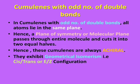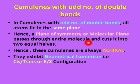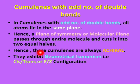Cumulenes with odd number of double bonds — we had already seen that in cumulenes with odd number of double bonds, all the atoms lie in the same plane. Accordingly, a plane of symmetry or a molecular plane passes through the entire molecule and cuts it into two equal halves. We know that whenever any element of symmetry is present in a molecule, they become achiral. Likewise, cumulenes with odd number of double bonds can show geometrical isomerism, i.e. cis-trans or EZ configuration, which we will study in our coming lecture.